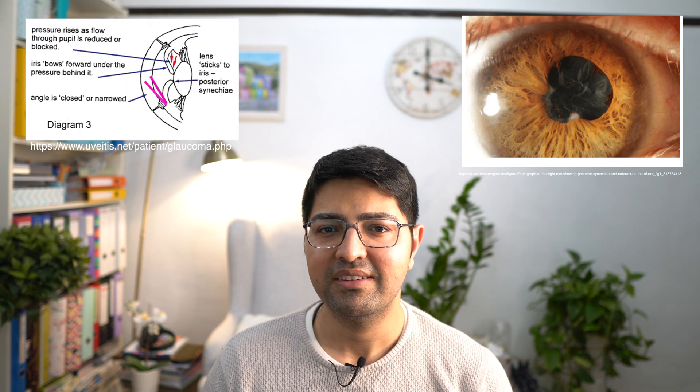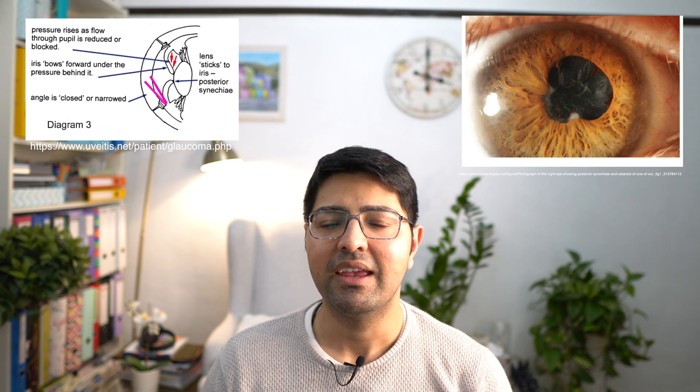The next red eye condition is iritis. Iritis is a condition in which patients present with a painful red eye. The pupil may be slightly miosed, and the pupil border and size may be irregular — that is because of posterior synechiae, where the iris sticks to the lens, causing irregularity in the pupil border and shape. There is classically a ciliary flush, and the intraocular pressure may be lowered or slightly high.